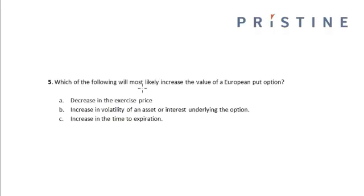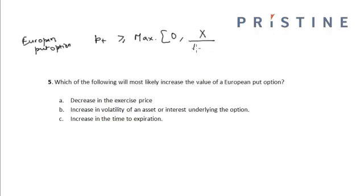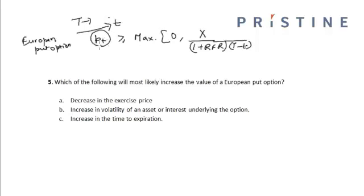Which of the following will most likely increase the value of a European put option? For a European put option, the put value is greater than the maximum of zero and the exercise price divided by (1 plus the risk-free rate) to the power of time left till maturity — that is, capital T minus small t — minus the stock price at time t.